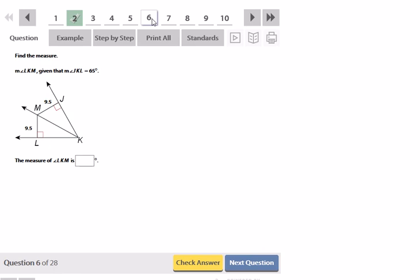Here, measure of angle LKM is what we want to find, and they're telling us that JKL, this big angle here, is 65 degrees. Well, because these distances, 9.5, are the same, that tells me that this ray, KM, is an angle bisector. It's cutting that 65 in half.